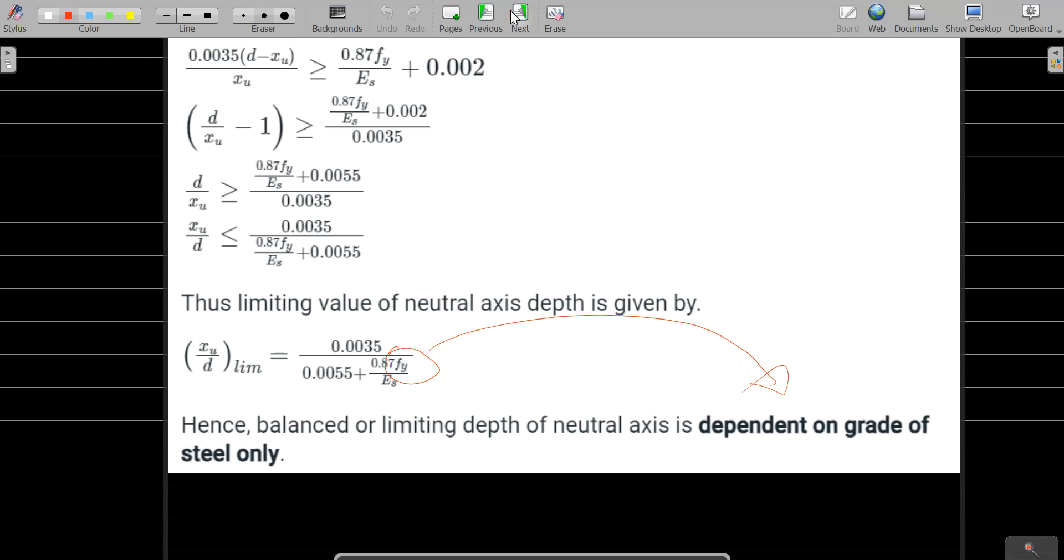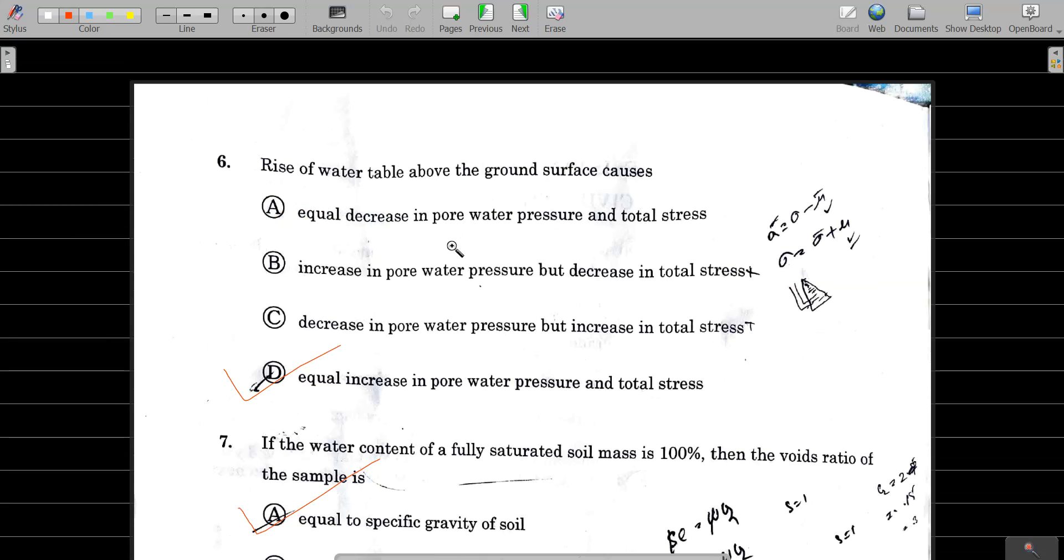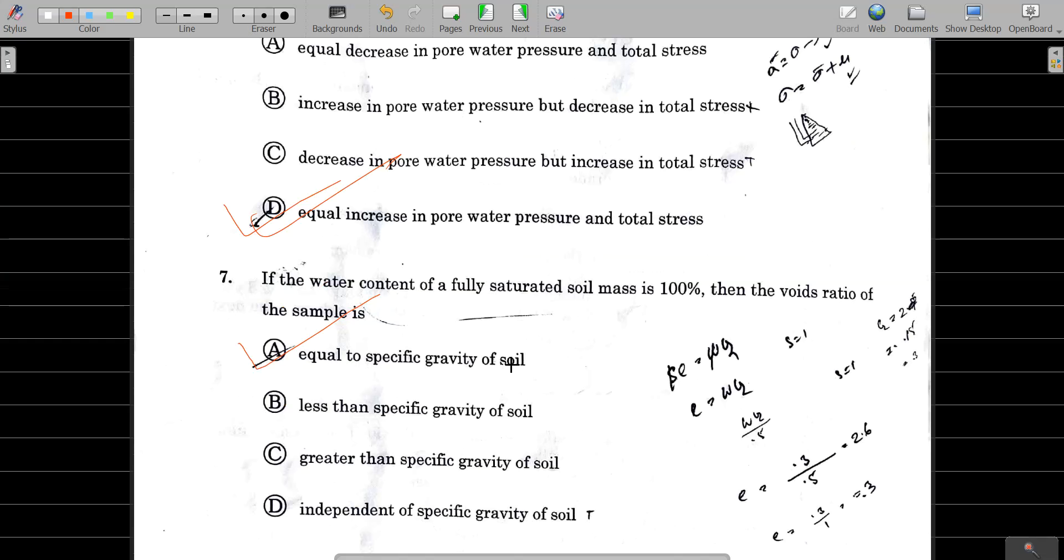Coming to question number 6: Rise of water table above ground surface causes equal increase in pore water pressure and total stress. When the water table rises, the pore water pressure will increase as well as the total stress will also increase. There is no change in effective stress.